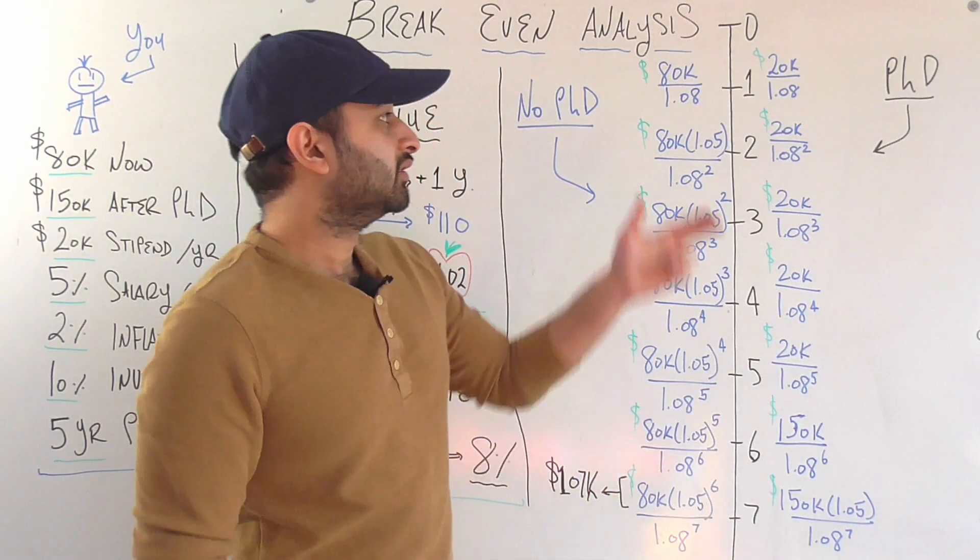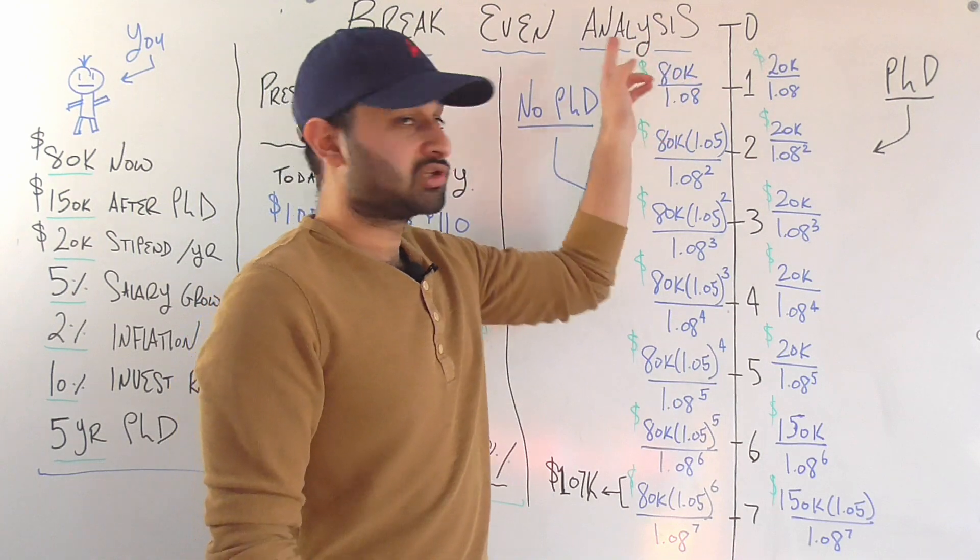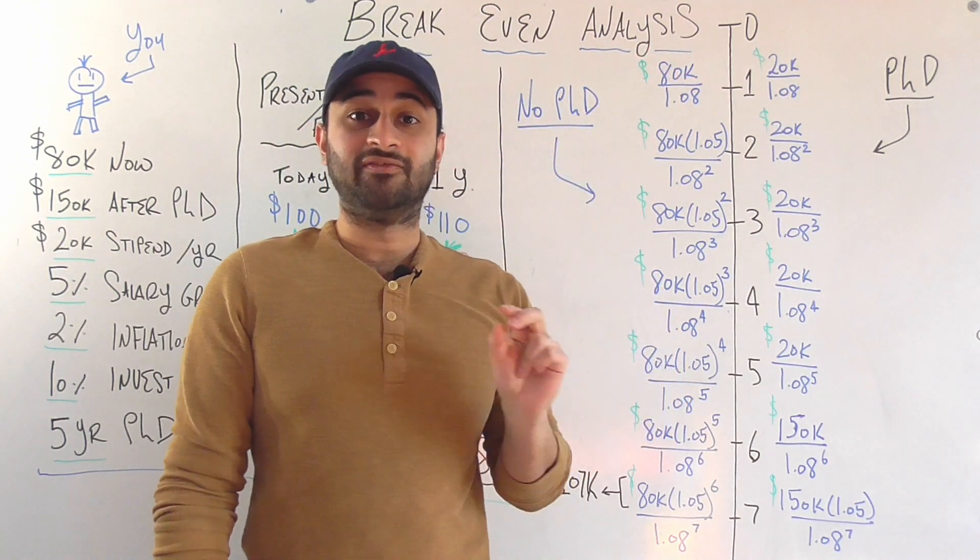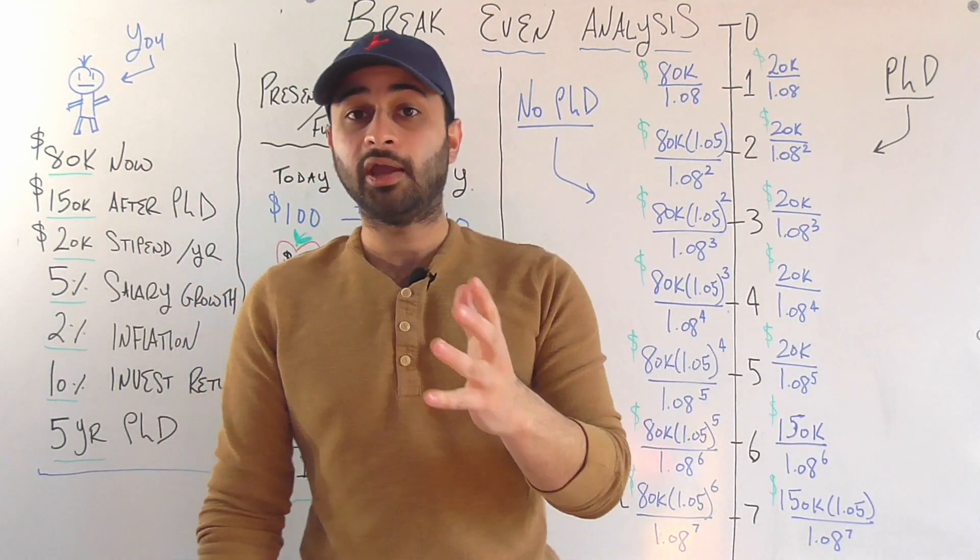And so first looking at not getting a PhD, in the first year, I'm going to make $80,000, but I need to divide that by 1.08. Why?